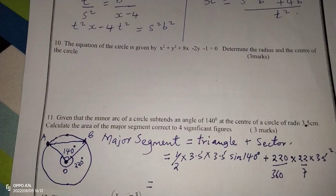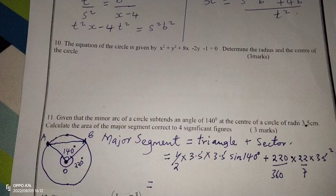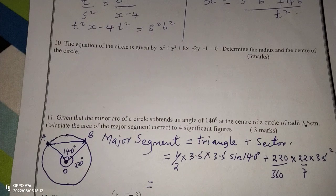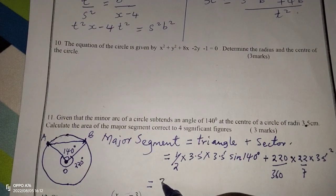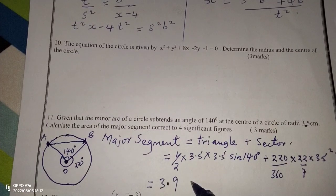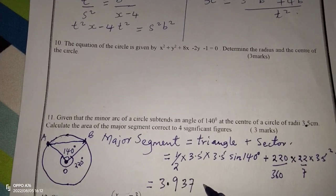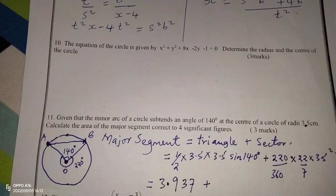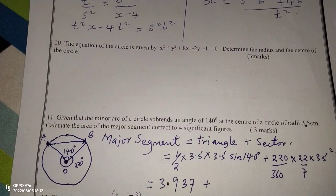So we can now use a calculator to get the area of this major segment, whereby we will have half multiplied by 3.5 multiplied by 3.5, then the sine of 140. This is going to be area of the triangle. Then plus, on the sector side, we have 220 multiplied by 22 multiplied by 3.5 squared, then we divide all this with 360 and 7.